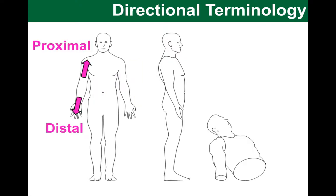Now we are talking about directional terms that typically relate to the limbs, upper or lower ones. Here we have a part that is more proximal, meaning it's closer to the trunk, while distal parts are further away from the trunk.